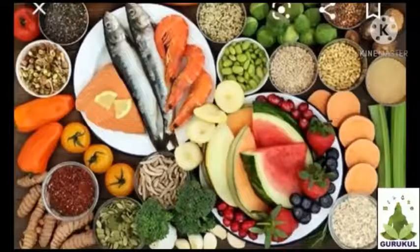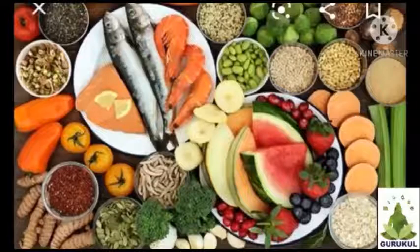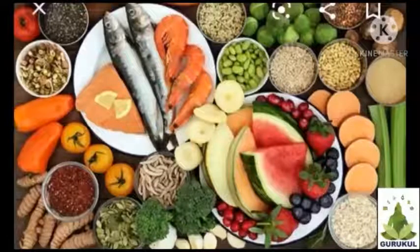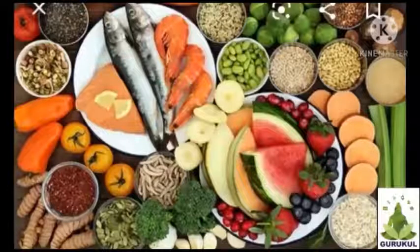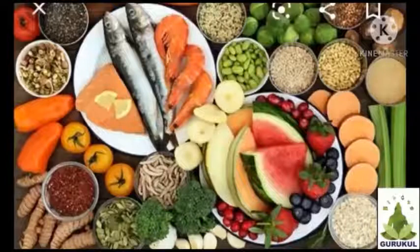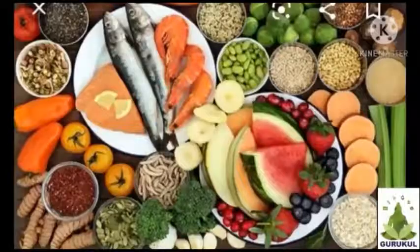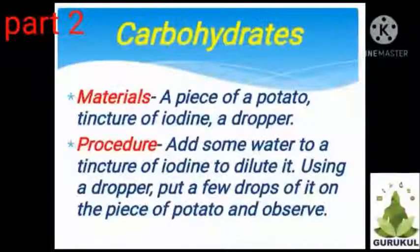You have learned that foodstuffs have constituents that are useful to us in different ways. Let us learn some more about the constituents of food. They are giving us one activity — try this. Next point is carbohydrates.